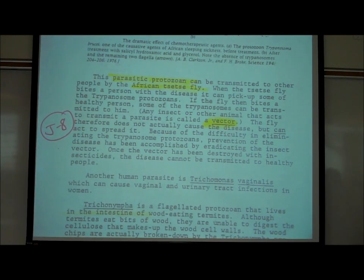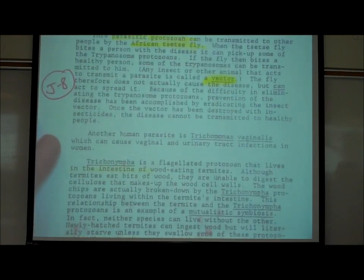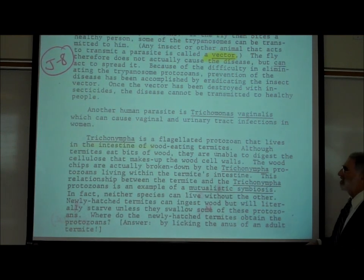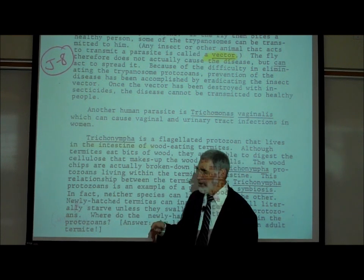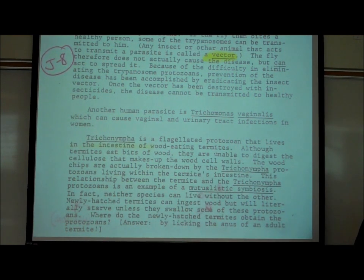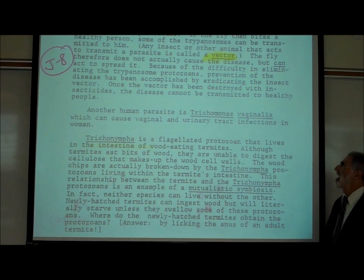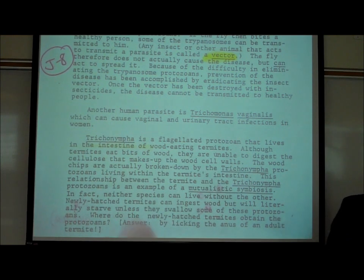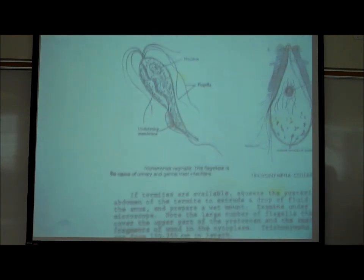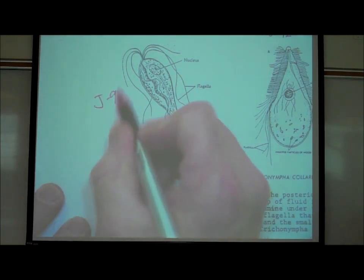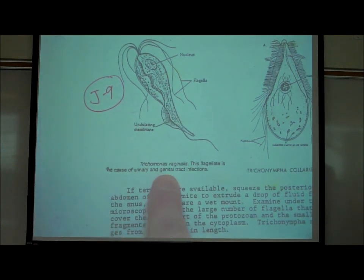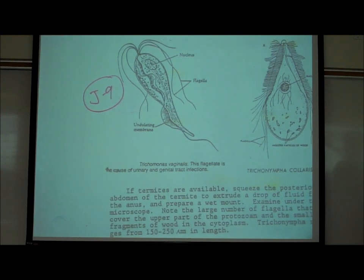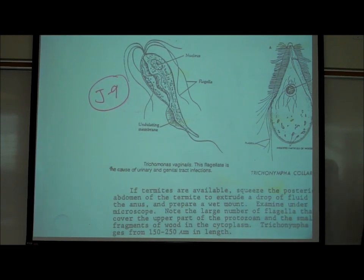There is another flagellated protozoan — Trichomonas vaginalis — that can live in the vaginal canal of women. It's not common in this country but does occasionally occur. A picture of it can be seen on page J9. There are medications available to kill this parasite.